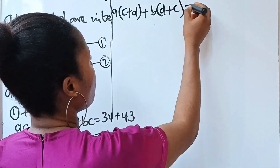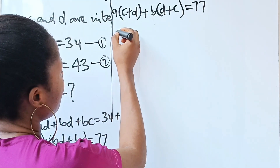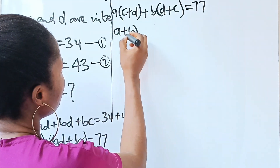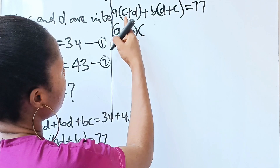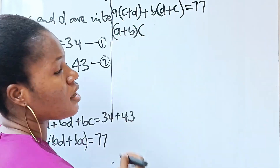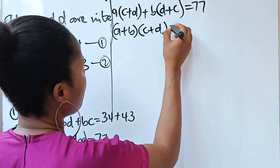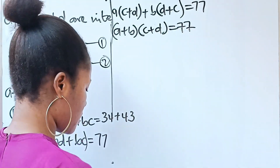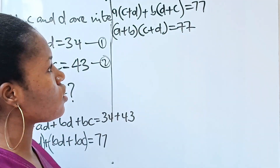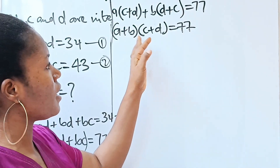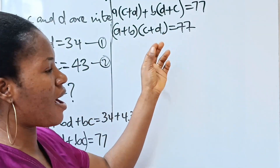So we have a(c + d) + b(c + d) = 77. Since (c + d) is the same in both terms, we can factor further to get (a + b)(c + d) = 77.